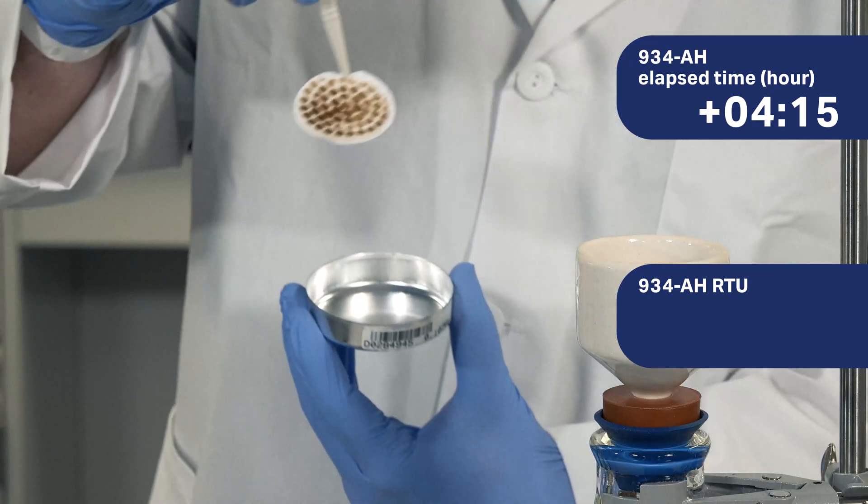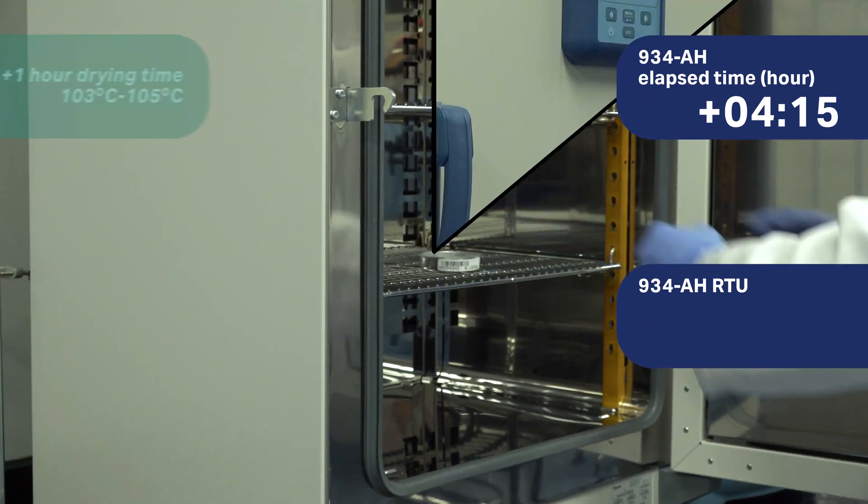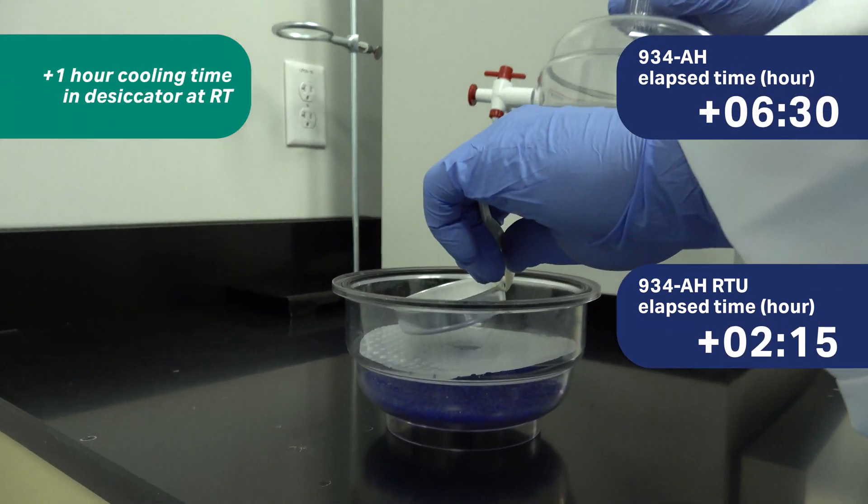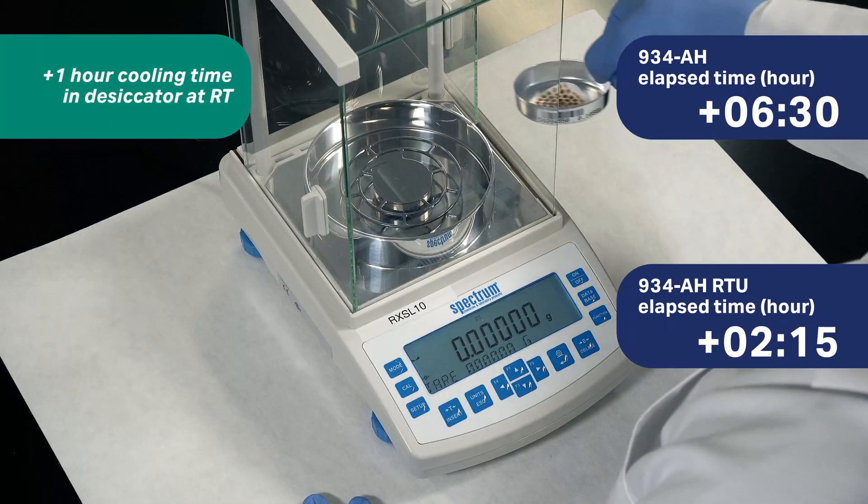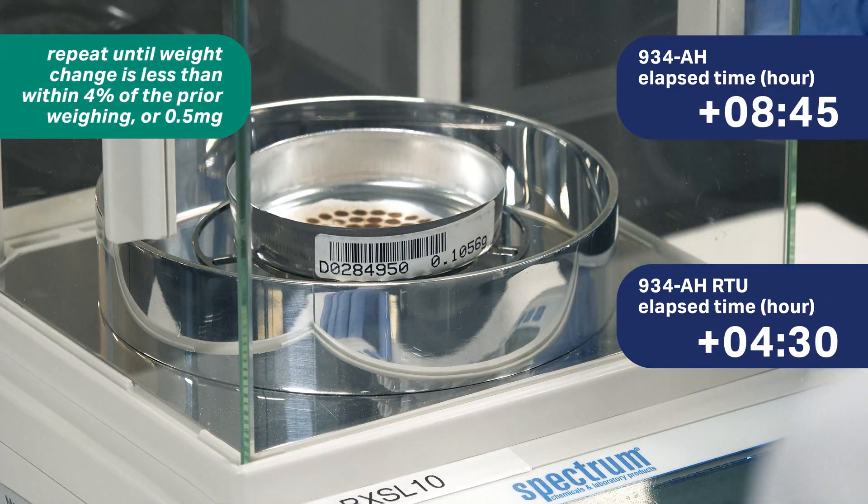Remove the filter and dry it in the laboratory oven for at least one hour. Carefully remove the filter from the oven and cool it in a desiccator. Then, weigh the filter on an analytical balance. The drying and weighing process is then repeated.